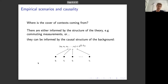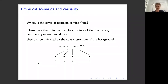The question is: where does the cover of contexts come from? There are two possibilities: either it is informed by the structure of some theory — for example, certain measurements commute so there must be an element of reality corresponding to performing them together — or it can be informed by the causal structure of the background protocol itself. The second case is more significant because the contexts themselves are given by the causal structure.